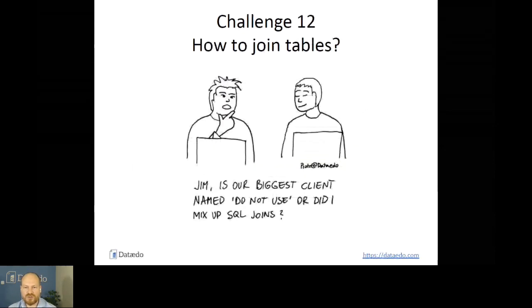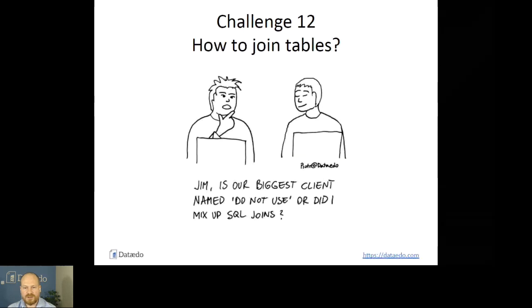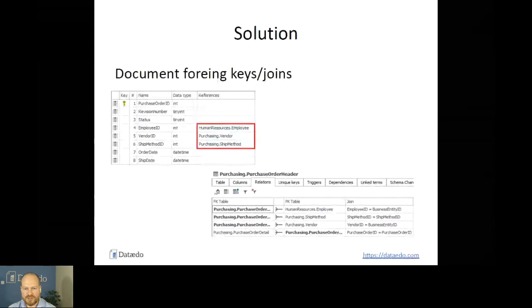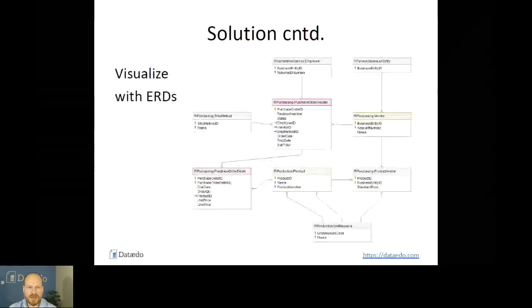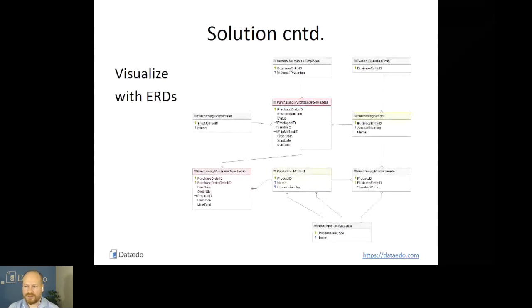Challenge number twelve: how do you join tables? That's a tricky one and an extension of the previous challenge — it's not always obvious how you can join tables. We use foreign keys and show them next to the column, also in tabular form showing how the joins actually work. Once you have this information completed in your repository, you can visualize it with ER diagrams. You do it in a number of smaller diagrams, which I will show later in my demo of the tool.